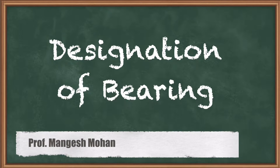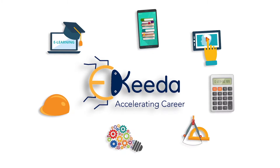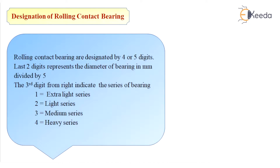In this topic we will discuss the designation of rolling contact bearings. While selecting a ball bearing from a manufacturer's catalog, the term 'series' is very often used. Some manufacturers use terms such as light series, medium series, and heavy series.